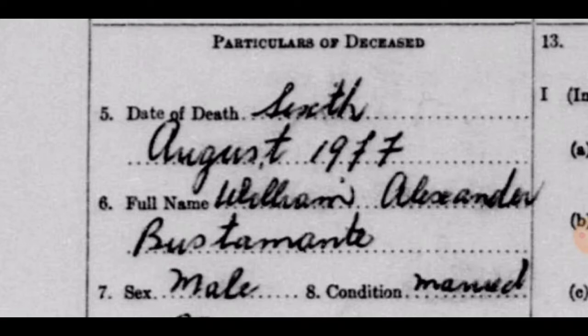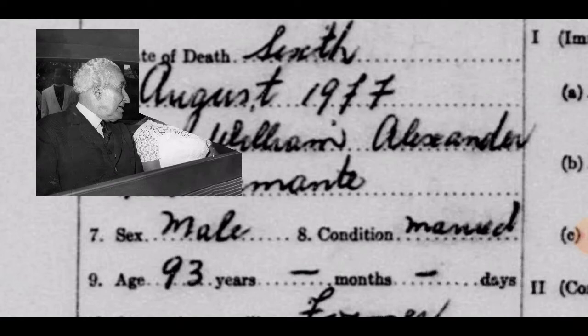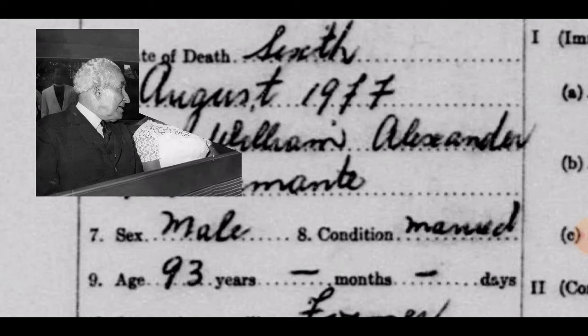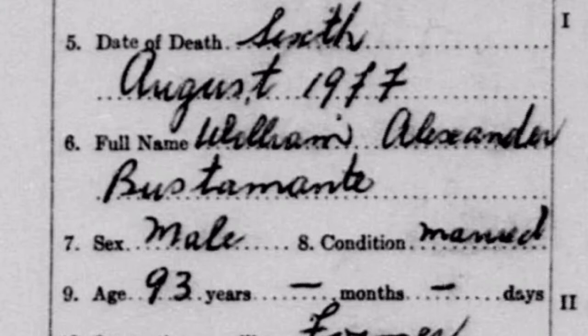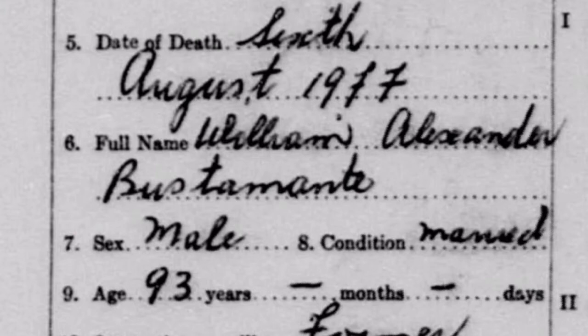He's described as male, and his condition is listed as married. He got married to Gladys Longbridge. Bustamante did not have children. Before he married Gladys Longbridge, he had been married before — his marriage to Gladys was not his first. He was first married in 1910. I'll do a separate video on that. But during his first marriage, his second marriage, and his single years, he did not have any children.